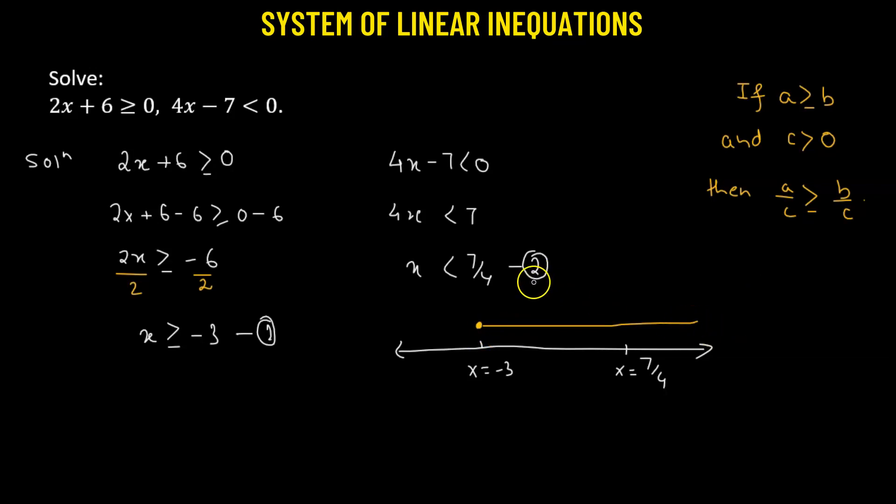And the second inequality says that we have to consider all the values of x which is less than 7 over 4. So that means we'll have to consider all the values of x which is lying to the left of 7 over 4, and extending all the way up to negative infinity. Here I have put a bubble, which means that x equals to 7 over 4 is not a part of the solution.